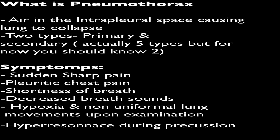Pneumothorax is simply air in the intrapleural space causing a lung to collapse, and there are two types: primary and secondary. The symptoms are sudden and sharp pain, as well as pleuritic chest pain, dyspnea, and hyper-resonance during percussion.